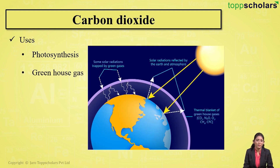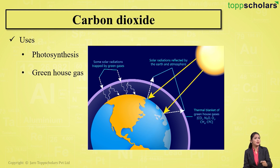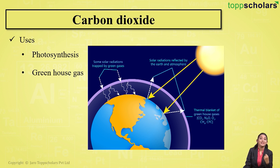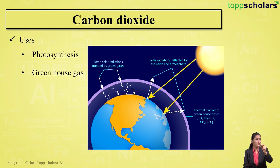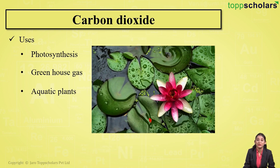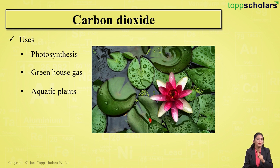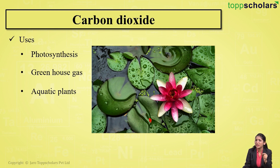Carbon dioxide is also said to be a greenhouse gas. This is because carbon dioxide helps to minimize heat loss by reflecting heat back to the earth's surface, thus helping in maintaining the earth's temperature. Carbon dioxide in its dissolved state is also used by aquatic plants for photosynthesis.